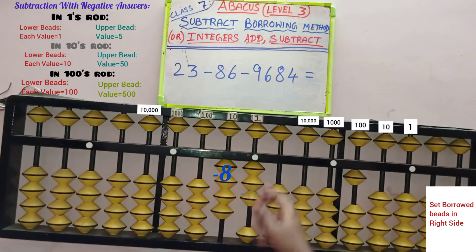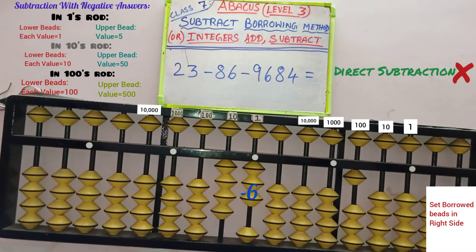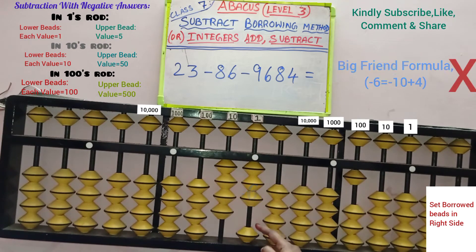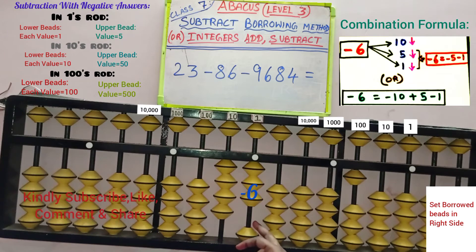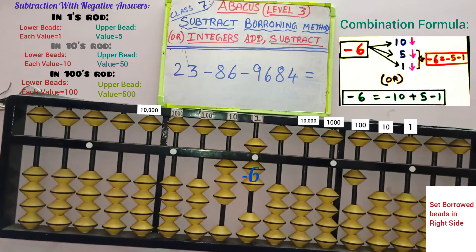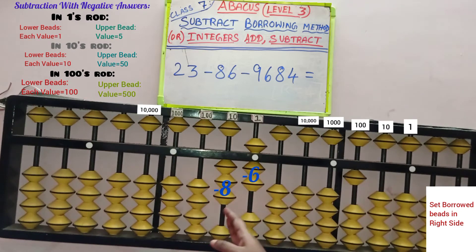Next, remove 6 beads from the 1's row because 6 is in the 1's place. Only 3 beads are available, so direct subtraction is not possible. 6's big friend is 4, meaning minus 6 requires adding 4 here, but we have only 1 bead to add — so big friend is also not possible. Now apply the combination formula for subtracting 6: combination minus means move beads downward. Remove 1 bead down from the 10's row — 10 downward completed. Then 5 downward completed. 5 plus 1 equals 6, so move that 1 bead downward. Hence 6 is removed using combination: minus 10 plus 5 minus 1. Minus 86 is completed.